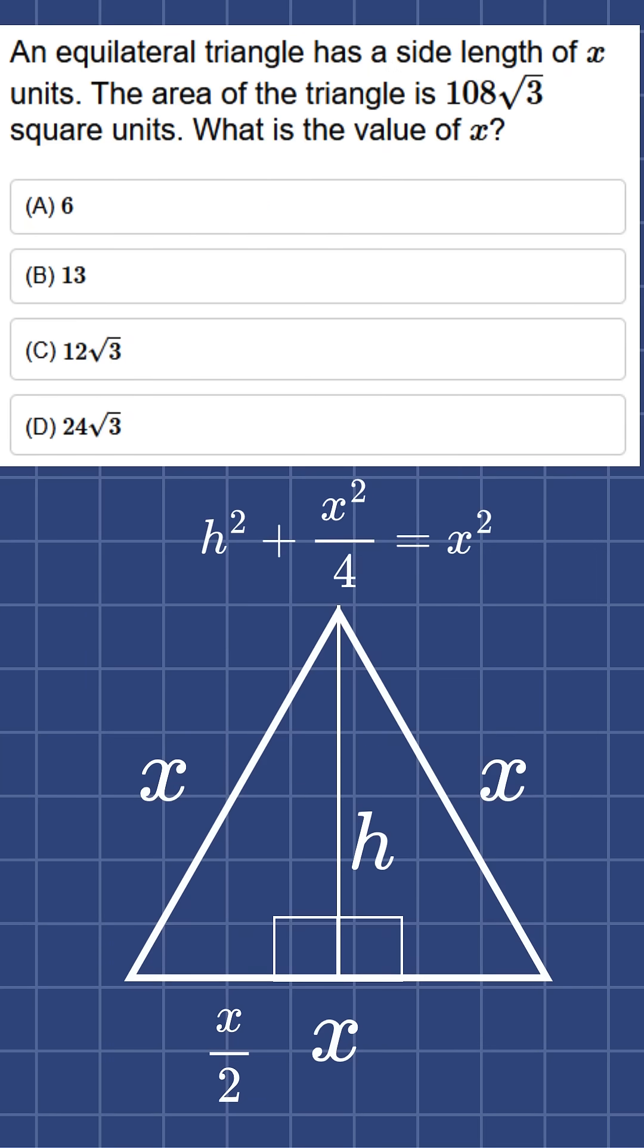I set it up. Then isolate h on one side by subtracting the other term from both sides. I can simplify the side with x, and voila! The height is square root 3 times x over 2.